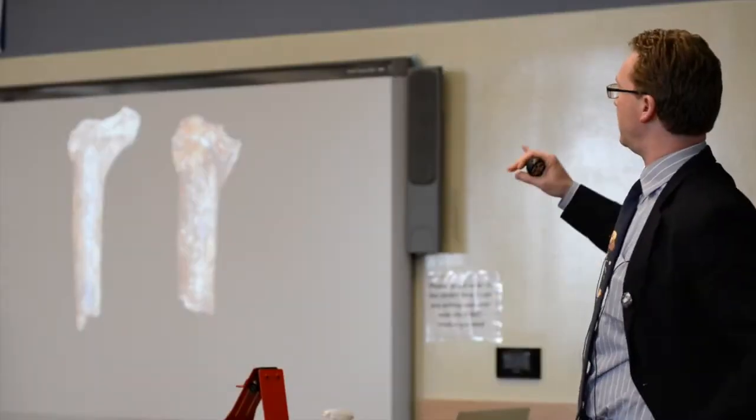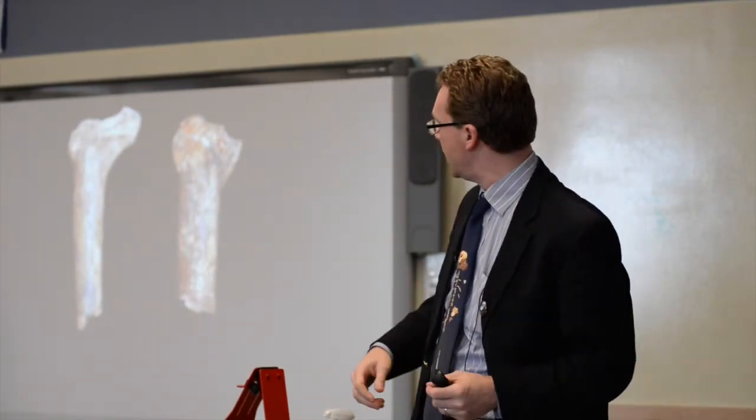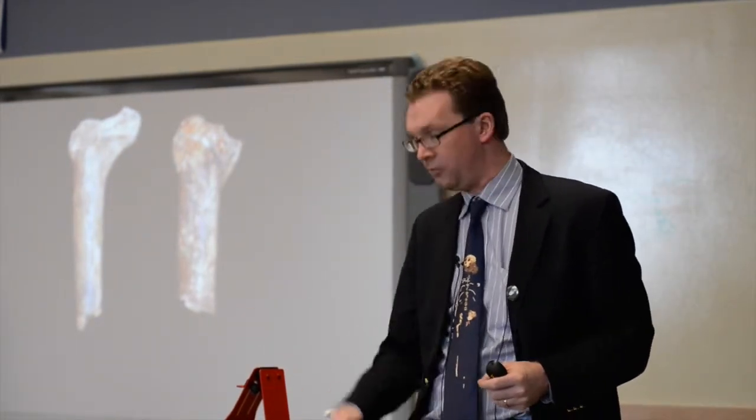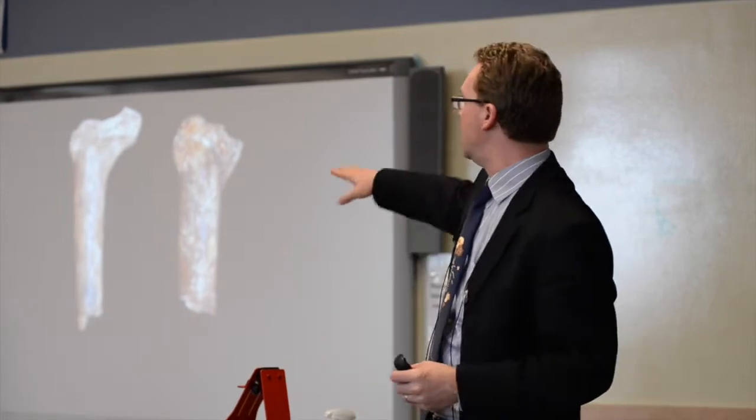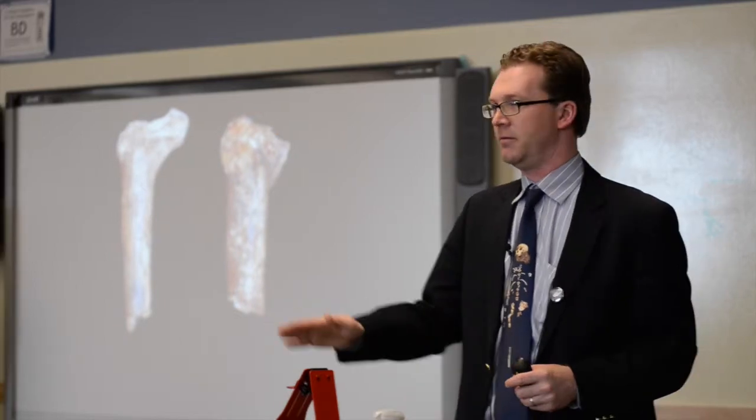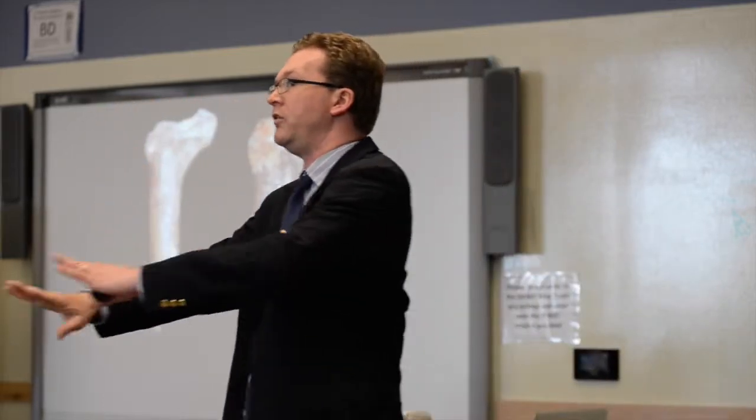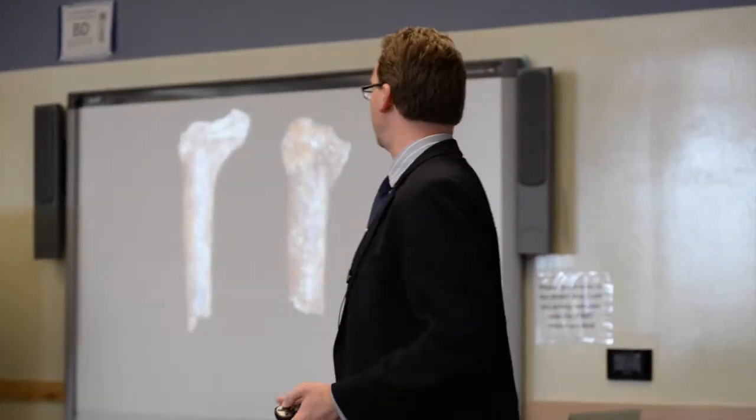This is a really important specimen because on the left is specimen number two, a right femur. So it's this bone right here from the right side. And on the right hand side is specimen 21, also a right femur from a bigger individual. So now you have two individuals. It's not one skeleton lying there. We now have multiple individuals.